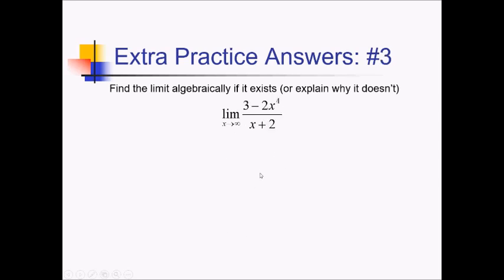On this problem, we're going to start by choosing our champion. Because we're going to infinity, we can ignore slower-growing terms, such as this 3 in the numerator. So we just have negative 2x to the 4th there. And this 2 in the denominator is not really worthy of consideration, so we just have an x down there.